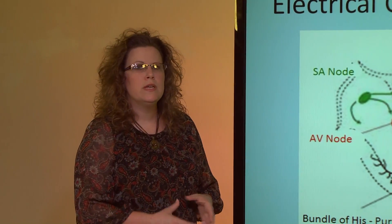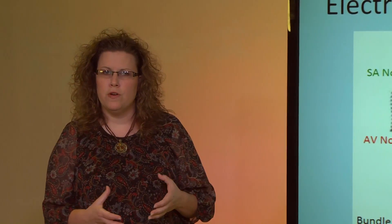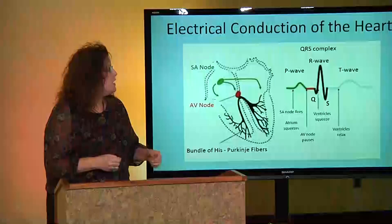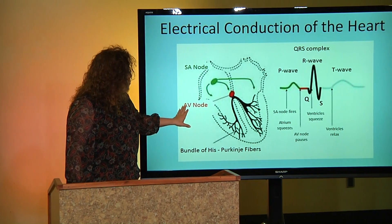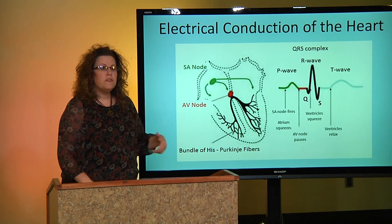To review: the SA node is the pacemaker of the heart, generating a rate of 60 to 100 beats per minute. If the SA node fails, the AV node can take over and generate a rate of about 40 to 60 beats per minute. If the AV node becomes sick, the Purkinje fibers can generate a rate, but only about 20 to 40 beats per minute — which is not strong enough to provide good blood flow. So if our heart is very sick, that rate is not going to be enough to support us.